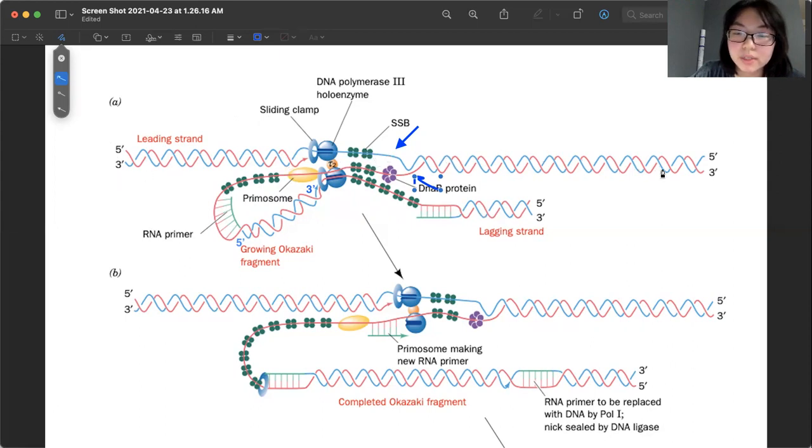And for the lagging strand synthesis, the parent strand will be this three prime to five prime red strand.